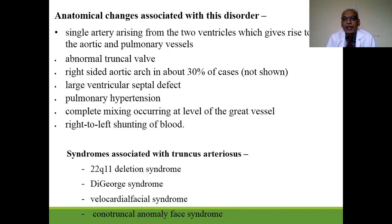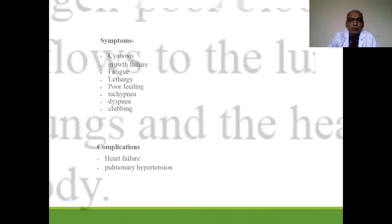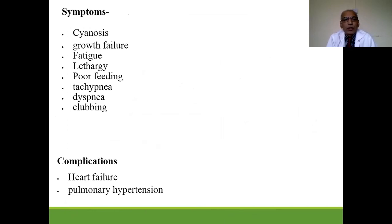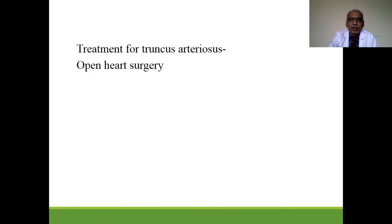A single artery arises from both ventricles, giving rise to both the aortic and pulmonary vessels. There is an abnormal truncal valve; 30% have a right-sided aortic arch, large VSD, pulmonary hypertension, and complete mixing of blood with right-to-left shunt. Symptoms are cyanosis, growth failure, fatigue, poor feeding, tachypnea, dyspnea, and clubbing. The main complication is pulmonary hypertension, and treatment is corrective surgery.